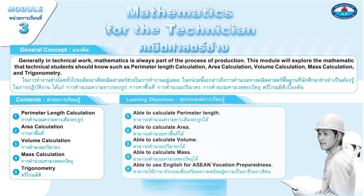Learning Objectives: 1. Able to calculate perimeter length. 2. Able to calculate area. 3. Able to calculate volume. 4. Able to calculate mass. 5. Able to use English for SCN vocation preparedness.